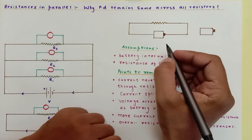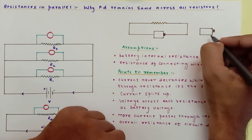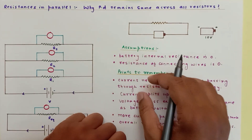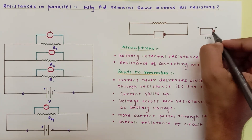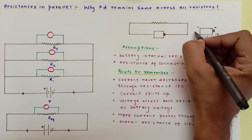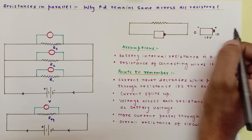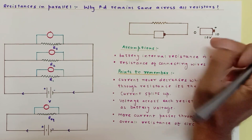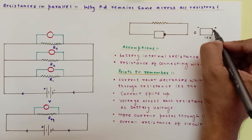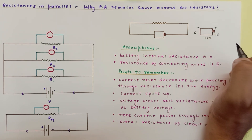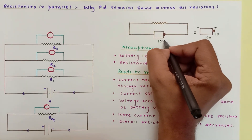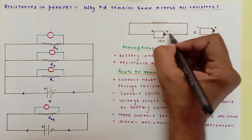Let me give a brief note on a battery. Suppose this is a 10-volt battery — positive terminal at higher voltage, say +10 volt, and the negative terminal at lower voltage, say 0 volt. The difference between these two potentials is called potential difference. You could also consider it as 20 and 10, or +5 and -5 — as long as the difference is 10 volts. The positive terminal is always at higher potential.